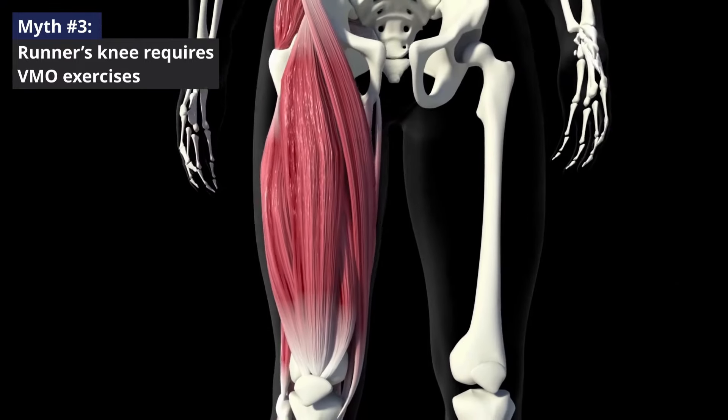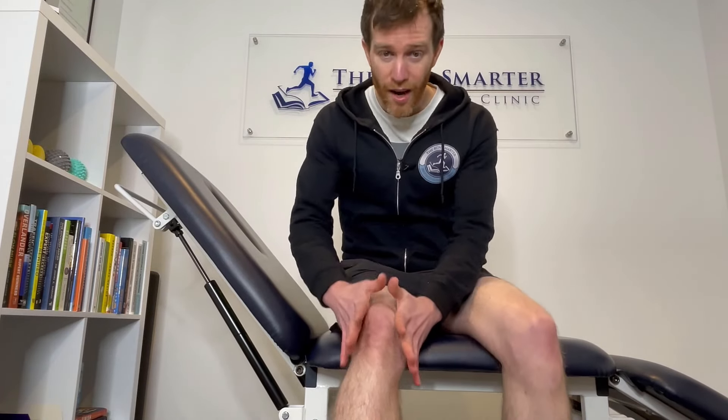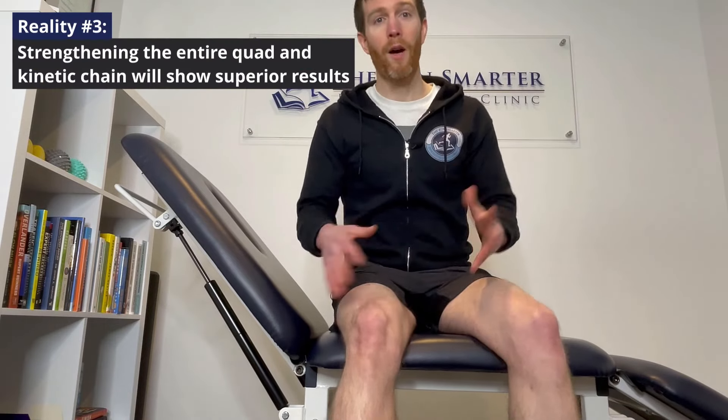Myth number three is that you need VMO retraining to help the kneecap reposition itself. Your VMO is a small band of muscles that attach onto the inside of your kneecap — theoretically, if they get stronger, they pull it across and help with relocation. We now know that's not really true. Since patellofemoral pain is most likely caused by exceeding the capacity of the joint, simply strengthening the entire quad and overall muscle complex will raise the knee's capacity, without needing to isolate those small muscle fibers.